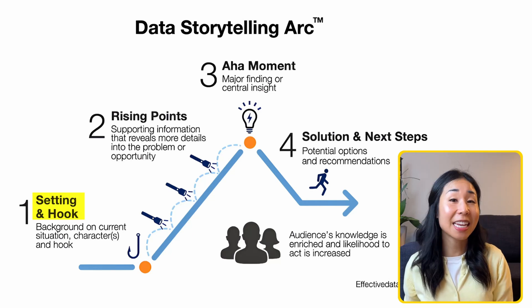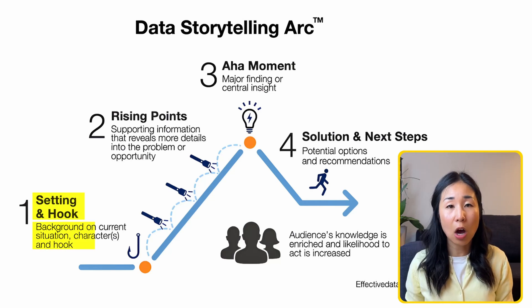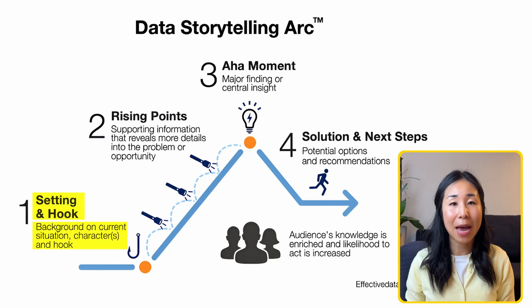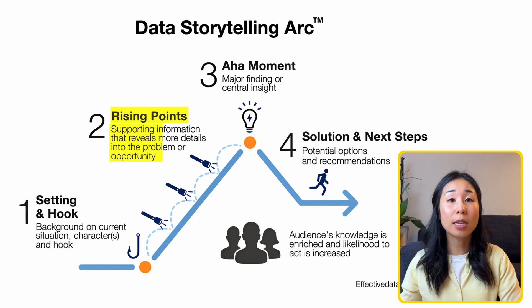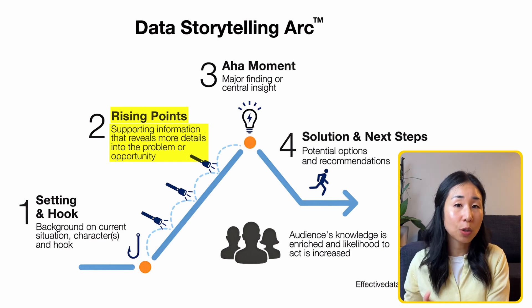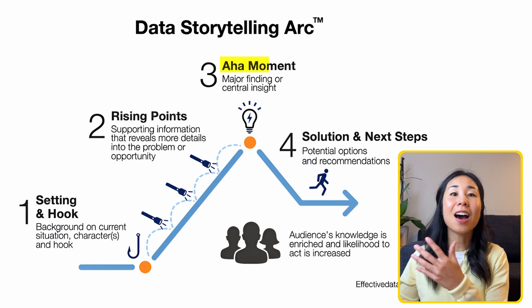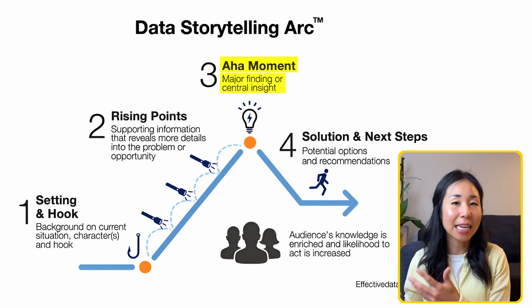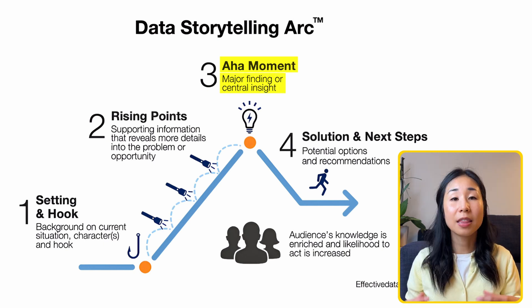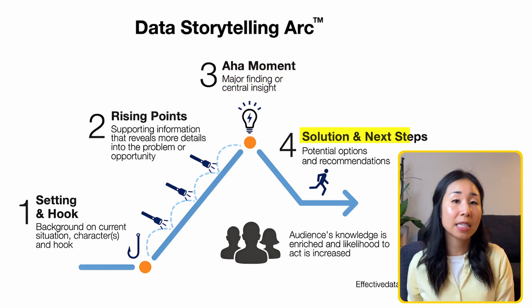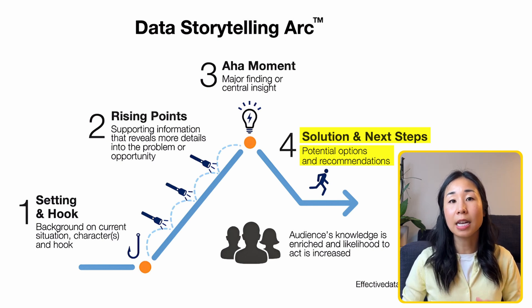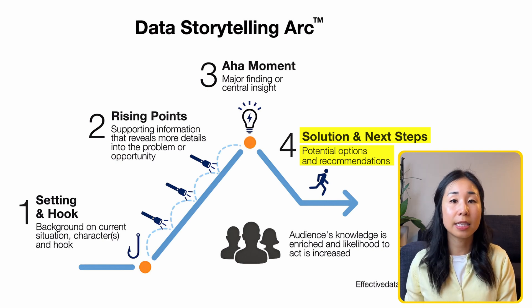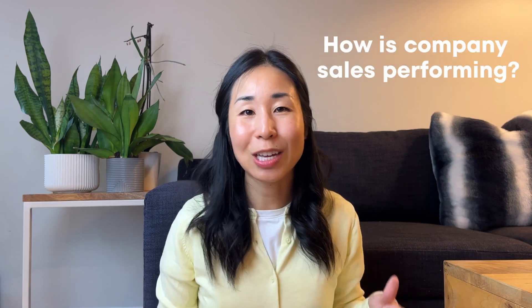The data storytelling arc follows a similar structure condensed into four sections. The first section is setting and hook, where you set the context and background of the story. The next is rising points, where you support the storyline with additional information. Then the aha moment is your finding and insight. Finally, you end with the solution and next steps, which includes your recommendation and makes your insights actionable for the audience.